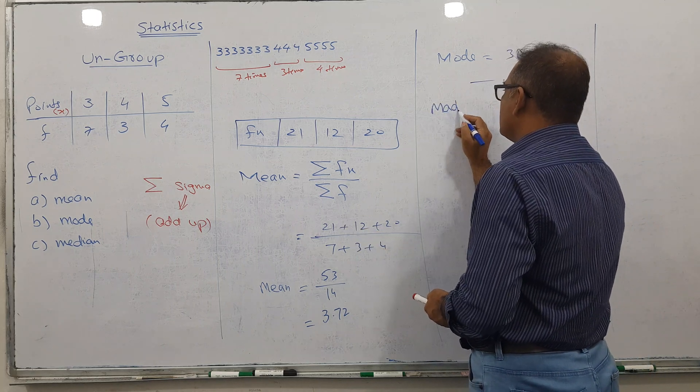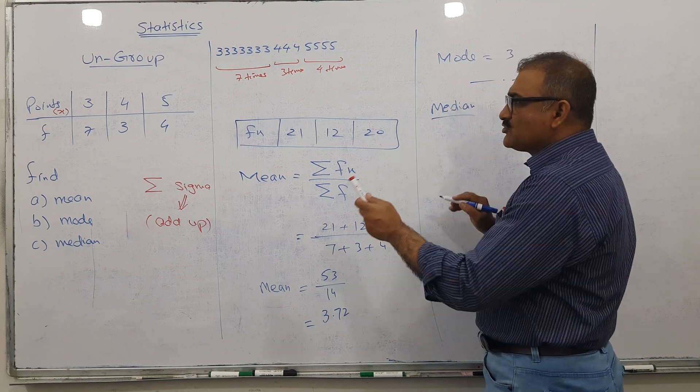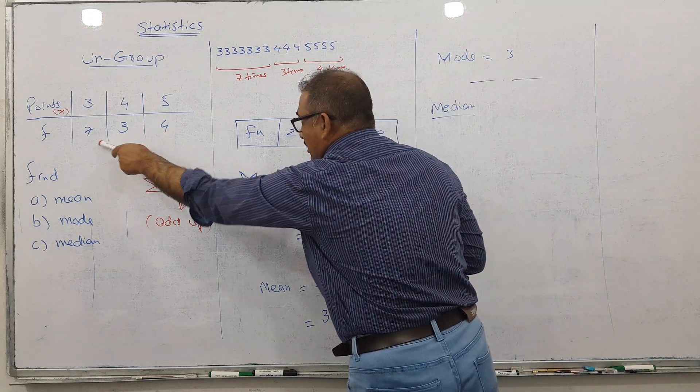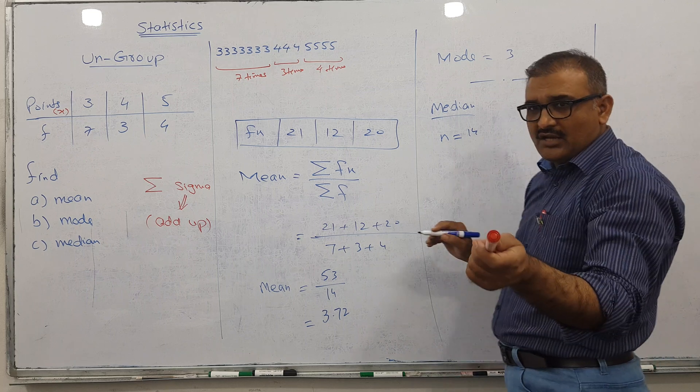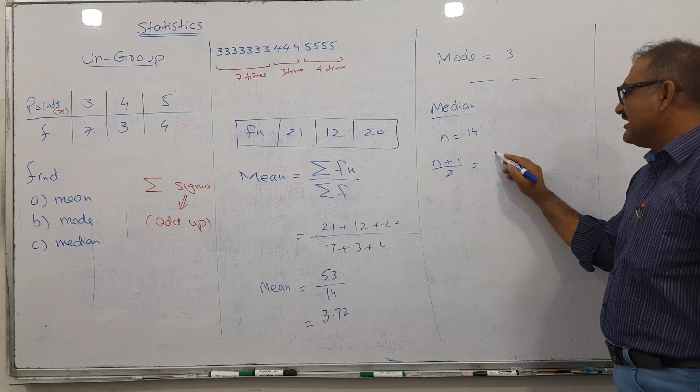To find median, n equals the total frequency, which is 14. The formula is (n+1) divided by 2. So (14+1) divided by 2 equals 7.5.